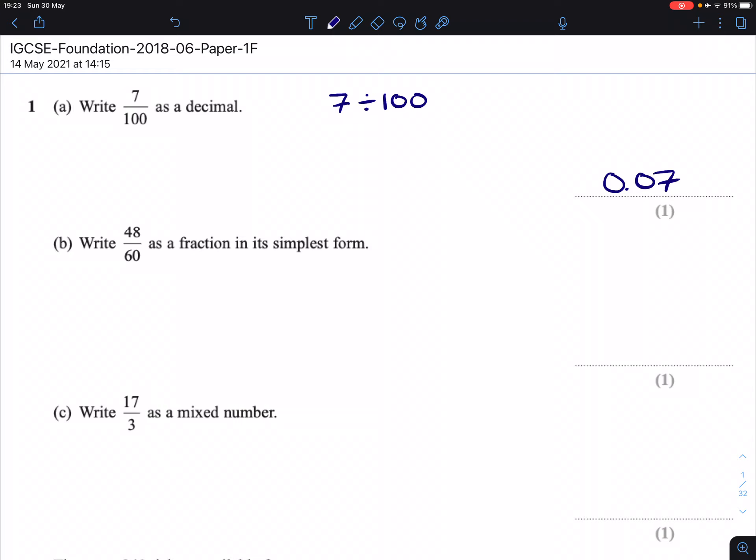Part B. Write 48 over 60 as a fraction in its simplest form. Now, it doesn't matter how many steps you take to simplify it, so although there is a way you can do this in one go, let's kind of go with the simplest, longest way here and then know that if you can do it quicker then that's fine.